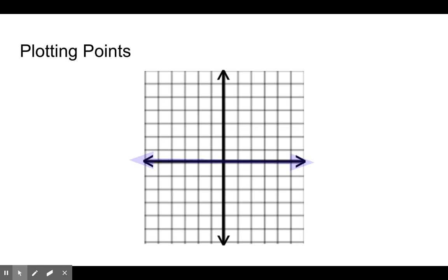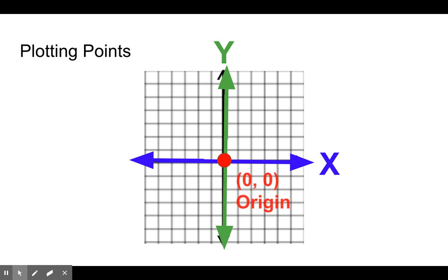To review plotting points, this line right here is called the x-axis. This line right here is called the y-axis. The point in the middle we call 0,0 or the origin. If we start in the middle at 0,0 and travel right, those are positive values. If we travel left from the center, those are negative. Up is positive, down is negative.